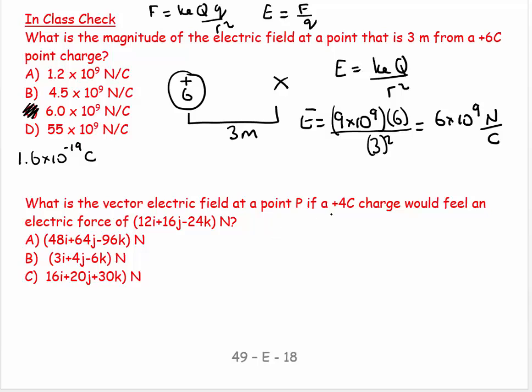So what is the vector electric field at the point P if 4 coulombs of charge feels an electric force of that. So here we have our mother charge. And then we have 4 positive. And it feels a force, I'm going to put it like this, of 12i plus 16j minus 24k newtons. There's the force it feels.